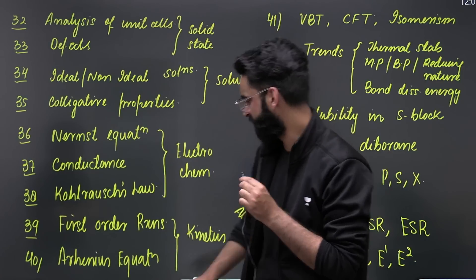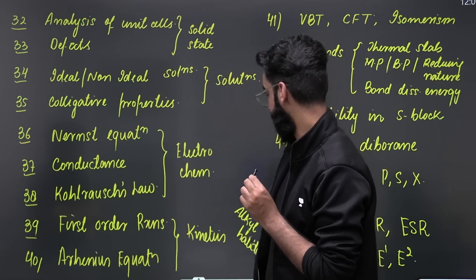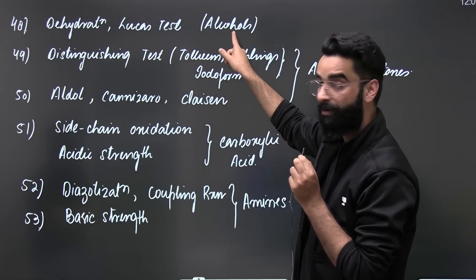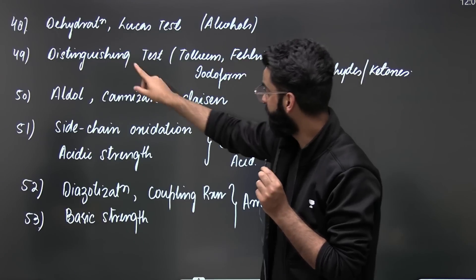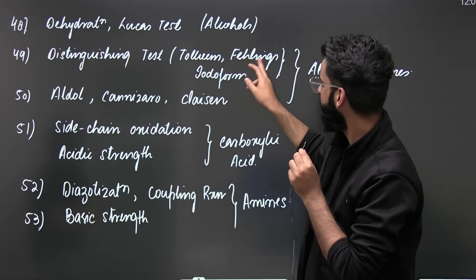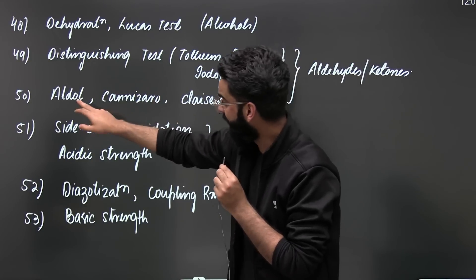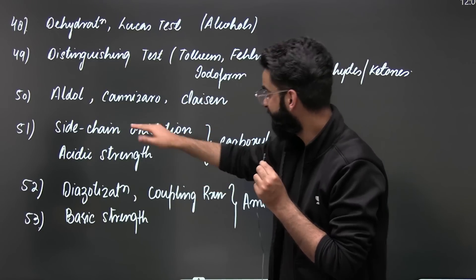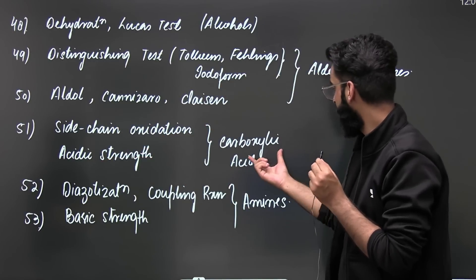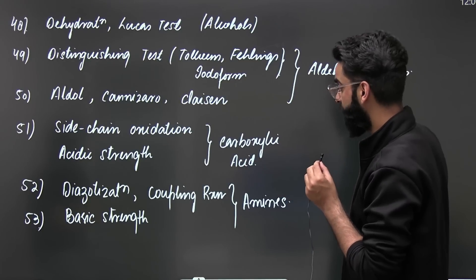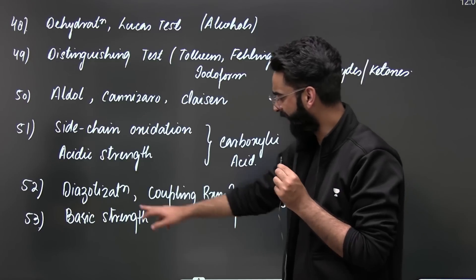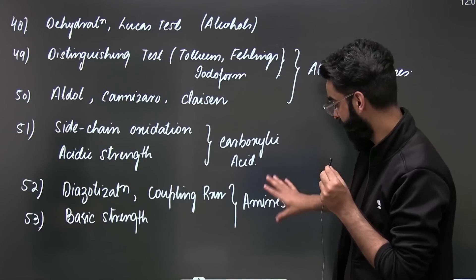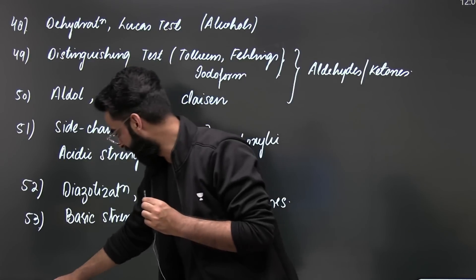Looking at few more topics: dehydration and Lucas test from the topic alcohols; distinguishing tests, which includes Tollens', Fehling's, and iodoform test; reactions like aldol, Cannizzaro, and Claisen - these are again important reactions; side chain oxidation and acidic strength from the carboxylic acid part. This was from your aldehyde and ketones part. Then from amines, when you talk about amines, diazotization is very important, coupling reaction is important, and even basic strength is important from the chapter amines.